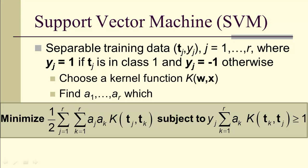Here's our problem. Minimize 1/2 sum over j, sum over k, a_j a_k times the kernel function of t_j, t_k, subject to our condition y_j sum k equals 1 to r, a_k K(t_k, t_j) greater or equal to 1.